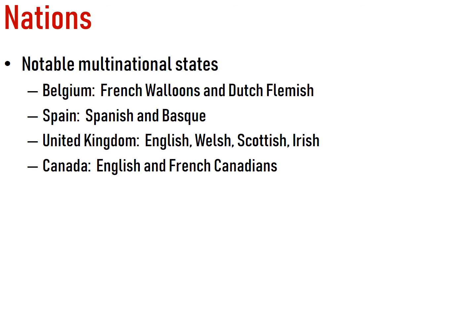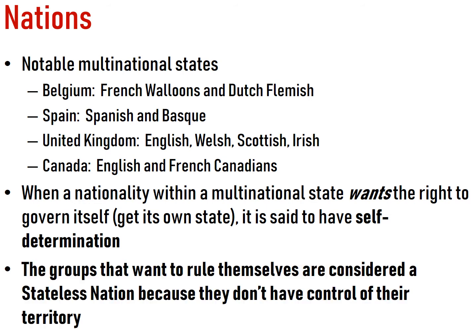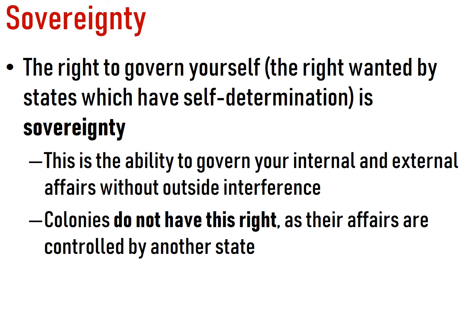When a nationality within a multinational state wants the right to govern itself and have its own state, that's the whole idea of self-determination. Groups that want to rule themselves are considered a stateless nation because they don't have control of their territory yet. The Quebec in Canada is considered a stateless nation with a lot of autonomy, but they don't control their own country yet. The same with the Kurds — they're a stateless nation; they have no autonomy but eventually want it. And what is sovereignty? This is the goal for all peoples: the right to govern yourself without other countries telling you what to do. And remember, colonies do not have this.